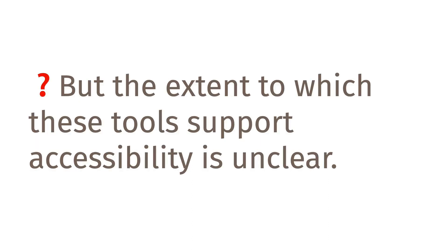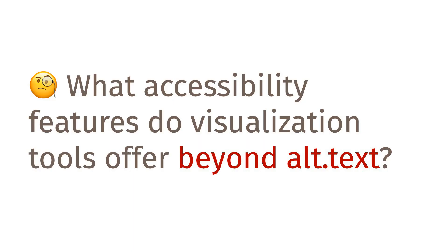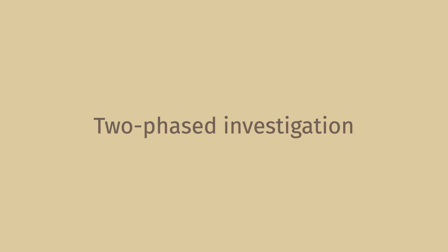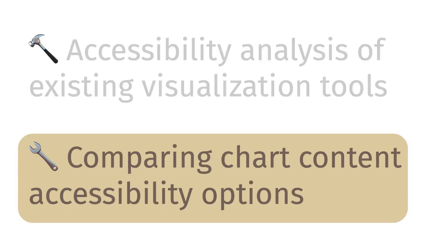Often the issue is beyond individual responsibility because many data visualizations today are produced using charting software and programming libraries. However, it is unclear to what extent these tools support accessibility. Our research question is twofold: what accessibility features do visualization tools offer, and what are the existing accessibility strategies for chart content and how do they compare? We tackle these questions through a two-phase investigation. First, we analyze the accessibility of existing visualization tools. Next, we compare chart content accessibility options to explore how these tools can be more accessible.